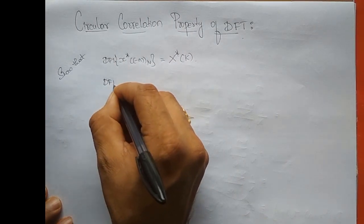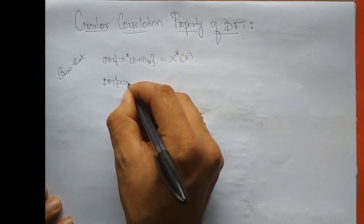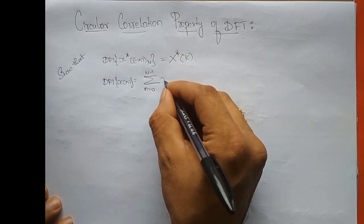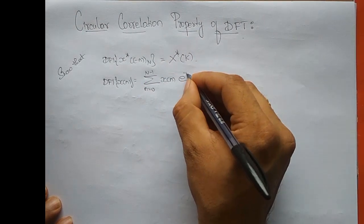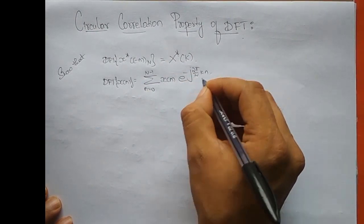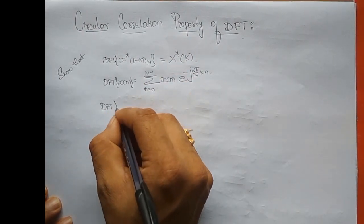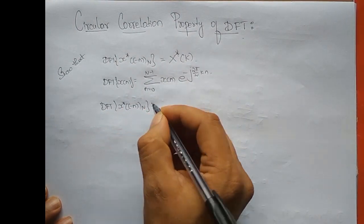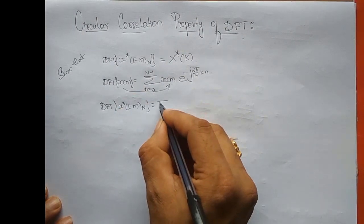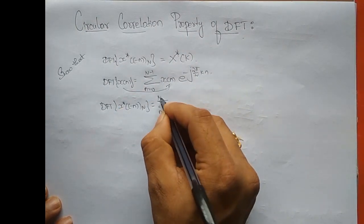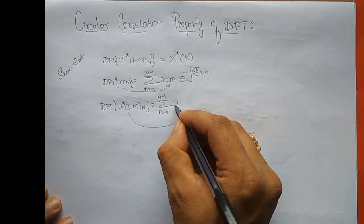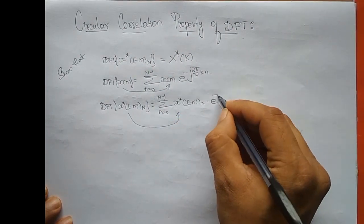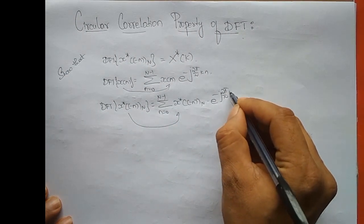So what is DFT of x of n? It is given by summation n varying from 0 to N minus 1 of x(n) e to the power minus j 2π/N times kn. Similarly, DFT of x star of minus n mod N has the term x star of minus n mod N into e to the power minus j 2π/N times kn.